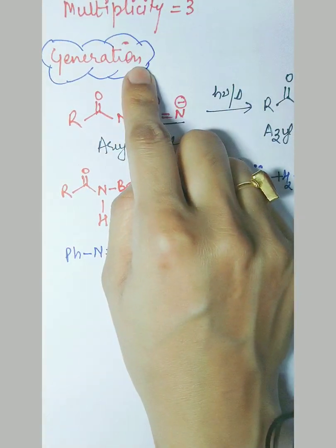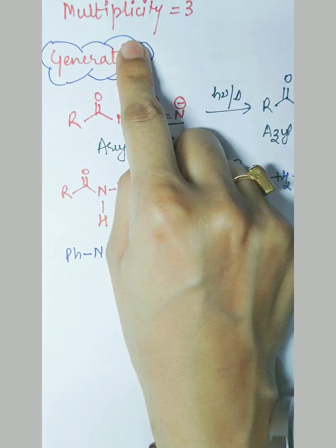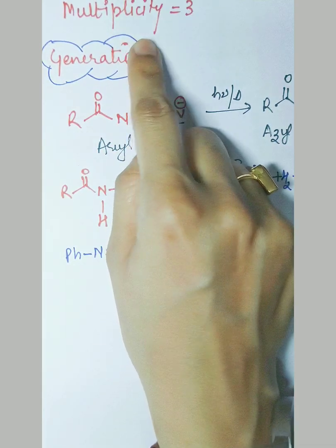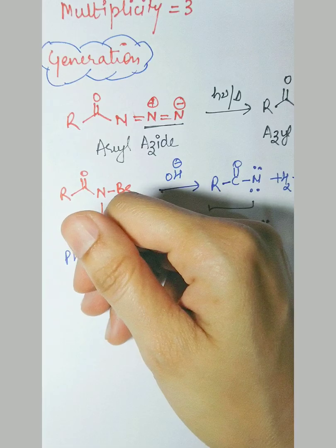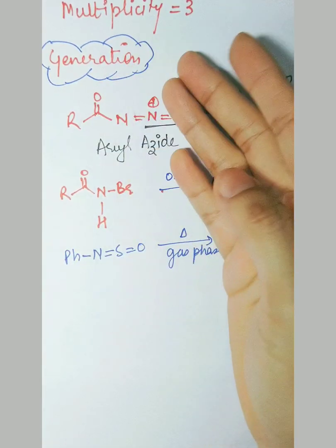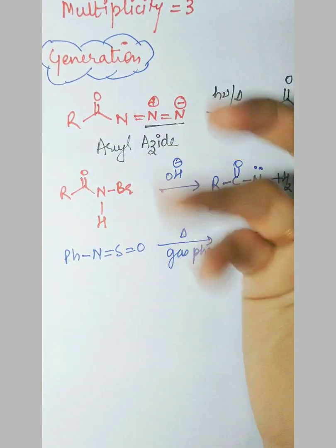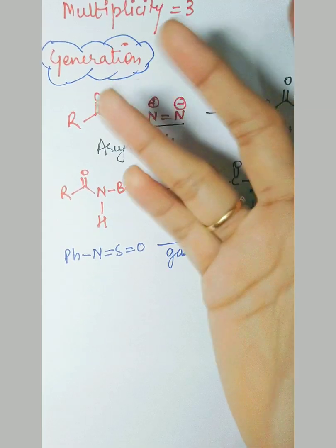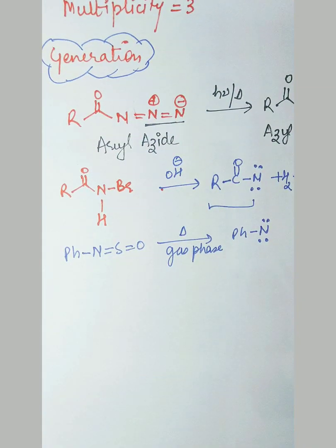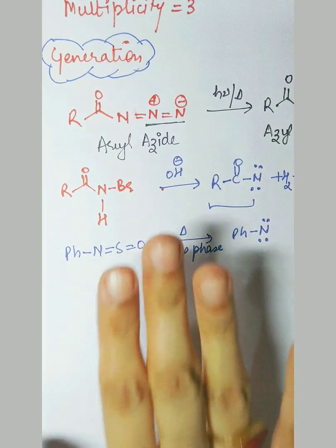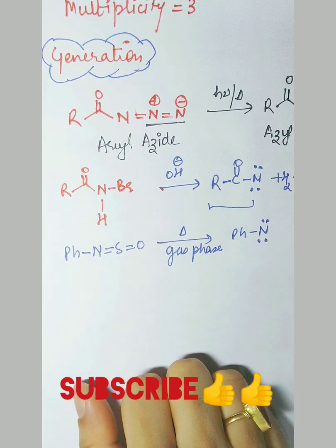In the next video we will continue with multiplicity. As already discussed, singlet carbene carries multiplicity one, triplet carries three, and nitrines carry three. We will explain how to calculate the multiplicity. That's all about nitrines — don't forget to like and subscribe. Thank you for watching.